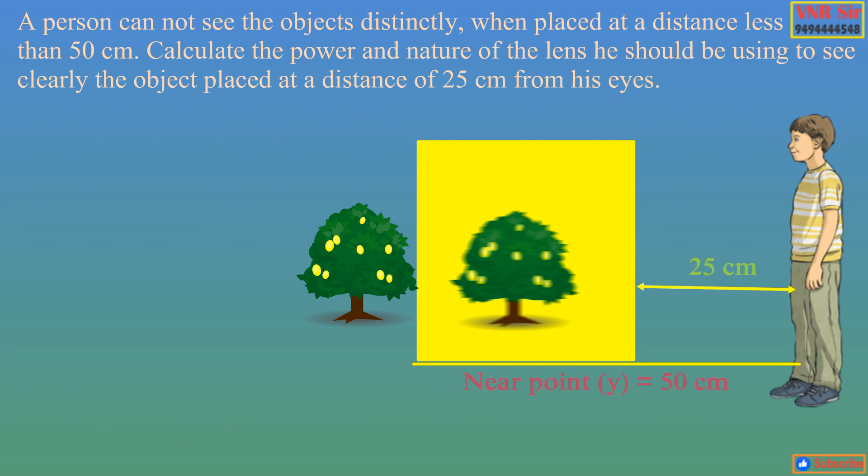So then the formula to calculate focal length is equal to 25y/(y-25), already we derived in the previous one. So in simplifying that, we will be getting the focal length of the lens as 50 cm and the lens is a convex lens.